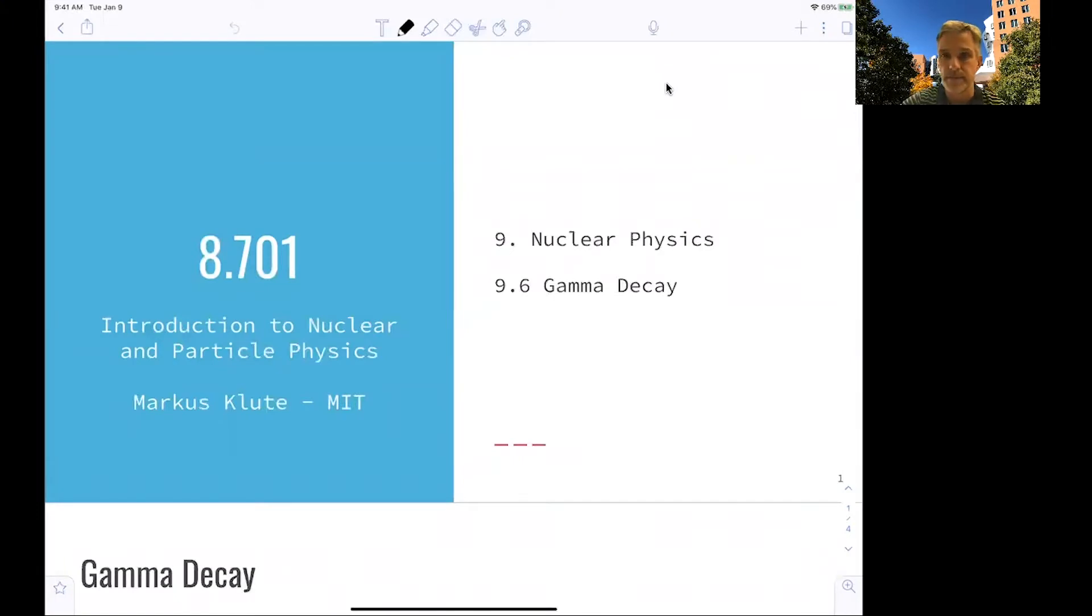Welcome back to 8.701. We continue discussion of nuclear decays with gamma decays. We have seen that we can understand nuclear stability or instability. We discussed alpha decays and beta decays.